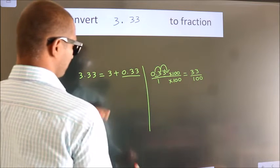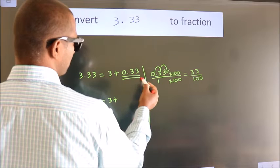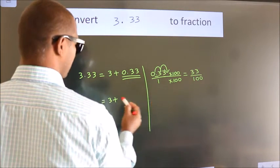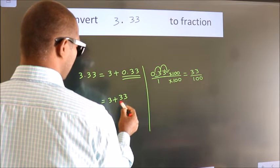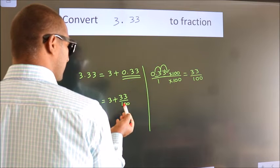Now here, 3 plus, in place of 0.33, we write this fraction: 33 by 100. So 3 plus 33 by 100.